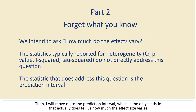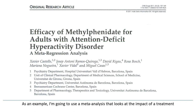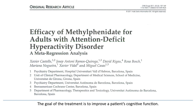The first thing we need to be clear about is what we have in mind when we ask about heterogeneity. As an example, I'm going to use a meta-analysis that looks at the impact of a treatment for adults with ADHD or attention deficit hyperactivity disorder. This is a condition where people have trouble concentrating. The goal of the treatment is to improve a patient's cognitive function. The analysis is based on 17 studies.